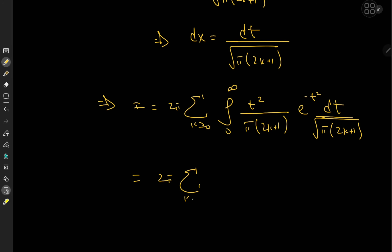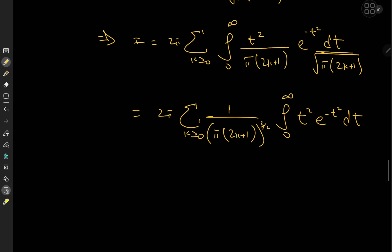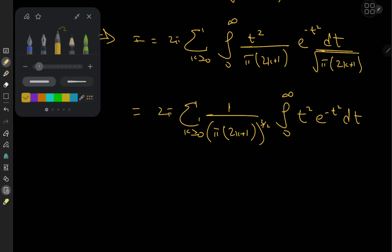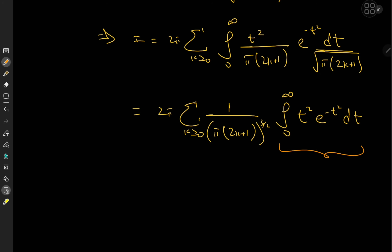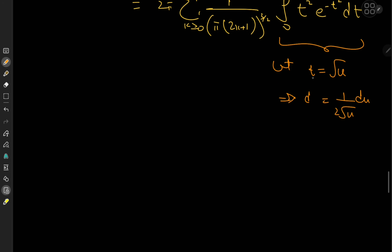Collecting the constants outside the integration operator, we have 2π times Σ(k=0 to ∞) of 1 / (π(2k+1))^(3/2) times the integral from 0 to infinity of t² · e^(−t²) dt. We can now invoke another transformation to get back the gamma function — we let t = √u, which implies dt = 1/(2√u) du.